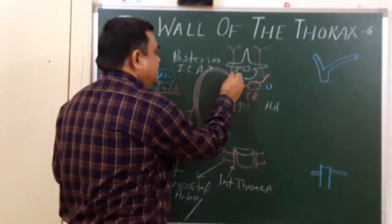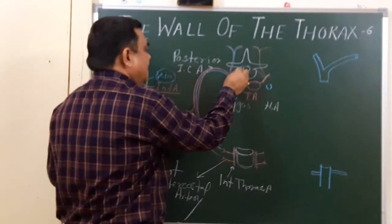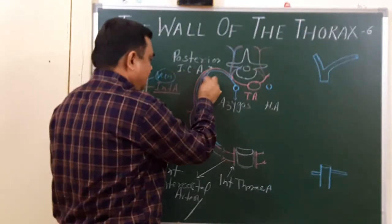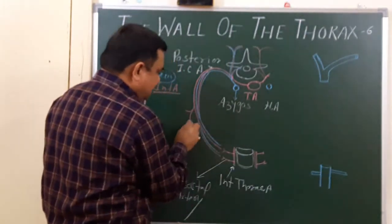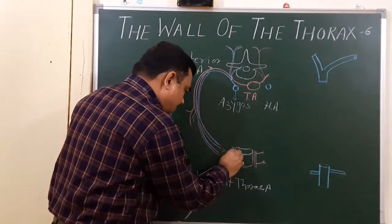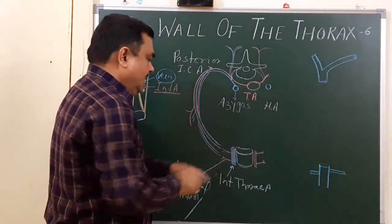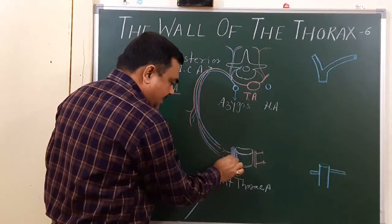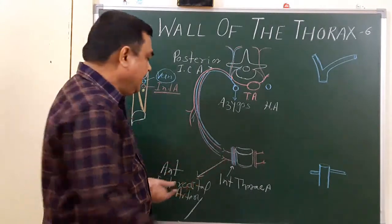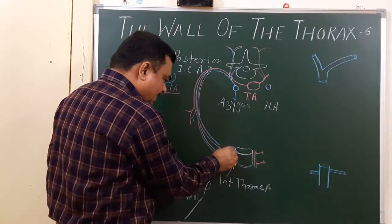Here it receives tributaries along the artery. Here it has one collateral tributary like this — this is a cutaneous tributary. And here is the internal thoracic vein. There may be two veins accompanying the internal thoracic artery in the lower part, and the upper part, both join to form a single vein. So this is the internal thoracic vein.